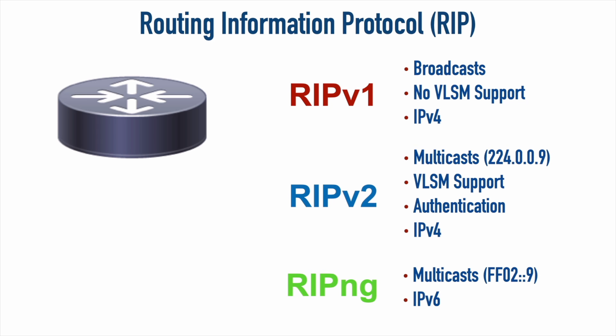Regardless of version, RIP selects the best path using hop count — how many routers you have to pass through to reach the destination. A directly connected network is zero hops; one router away is one hop. RIP is not very scalable because the maximum is 15 hops; 16 is considered infinity, meaning unreachable. RIP sends its full routing table every 30 seconds — called a full update — but triggered updates can advertise changes immediately without waiting for the 30-second interval.